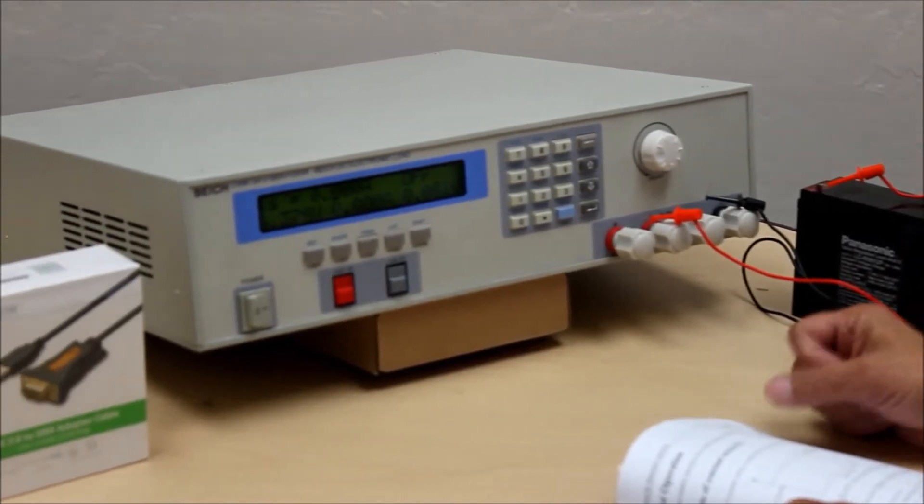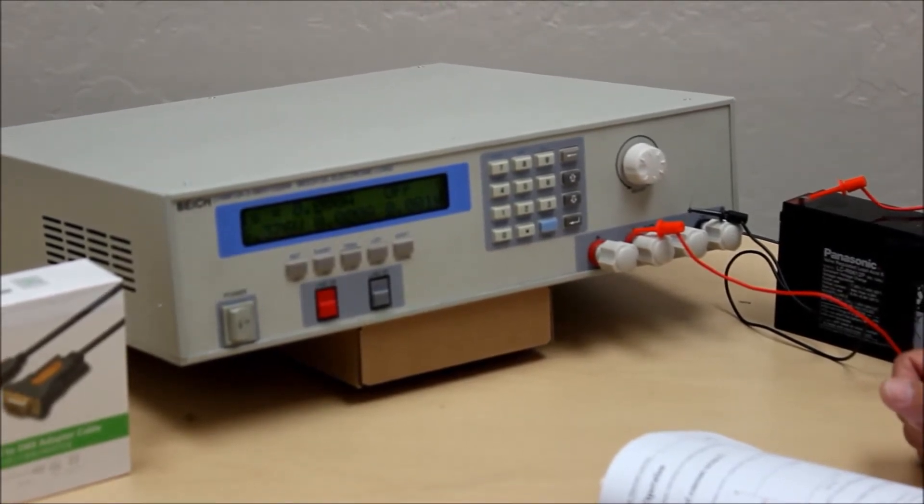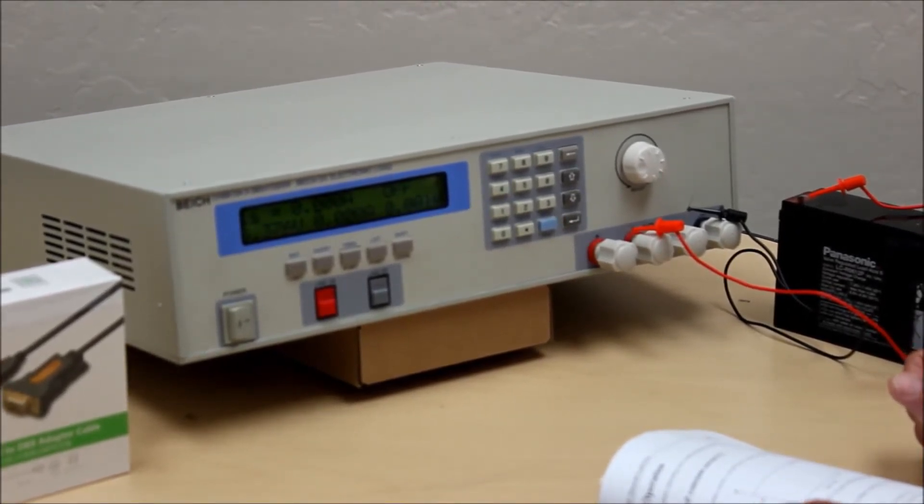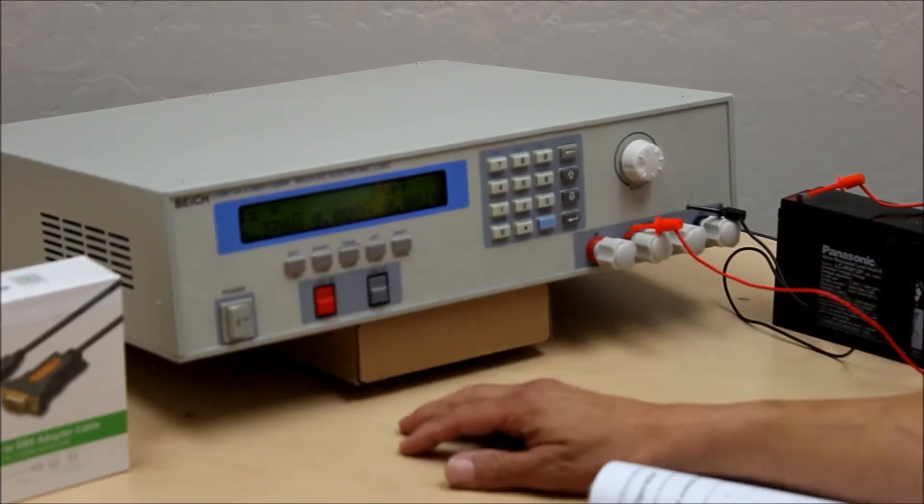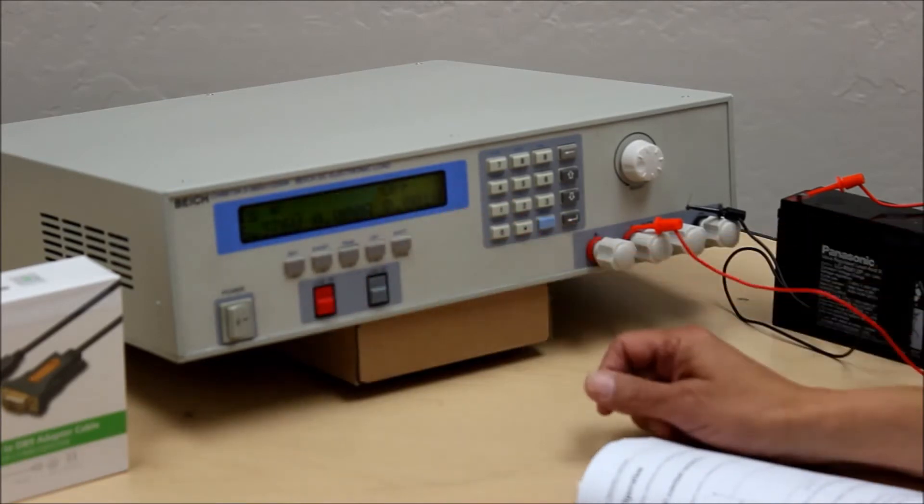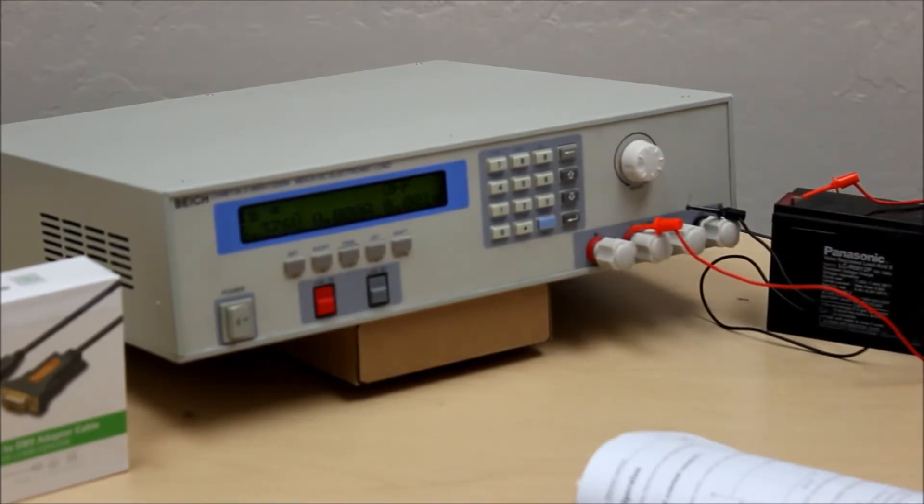So to go ahead and set the load that you want to draw from this thing and again this is a very repeatable and precise value of constant load. You go ahead and set the ISET button which now gives you a blank screen so I can now enter in the numbers. This is a 12 amp hour battery.